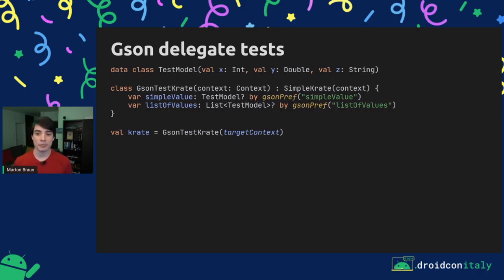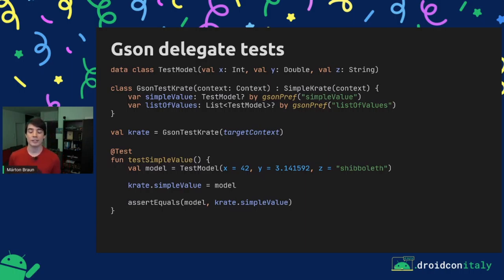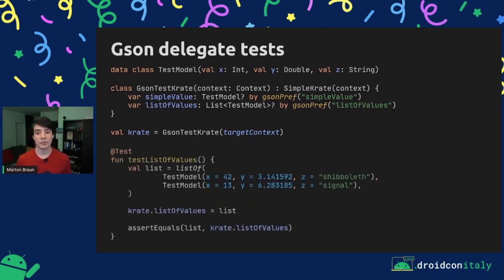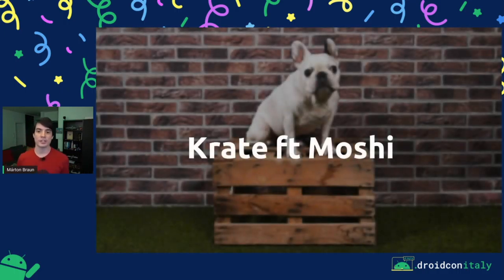The test is nearly trivial at this point. We create a TestModel, grab our Crate, write the model value into the Crate, and then immediately read it back and check that we get the same value — because this puts us through a serialization and then a deserialization cycle. If we run this test with our fixed implementation, this test will pass. We can also check the list of values: create a couple of different TestModel instances with some random data, put that into the Crate, and grab it back to verify we still have the same value. This test also passes successfully.